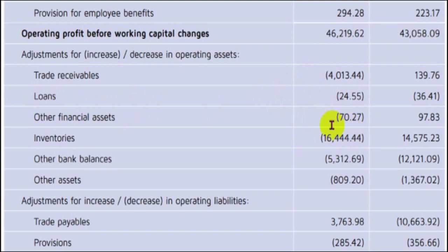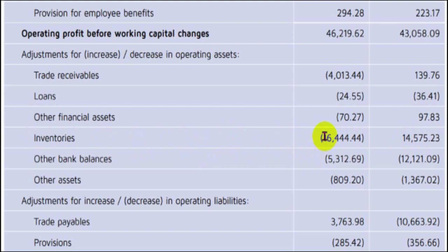The company spent on inventories an additional 164 crores — a huge amount compared to the previous year when it had actually sold inventory and received 145 crores. In 2020, the company invested an additional 164 crores in inventory, suggesting it expects orders and needs to stock up to fulfil them.